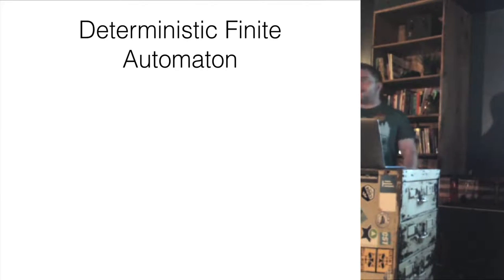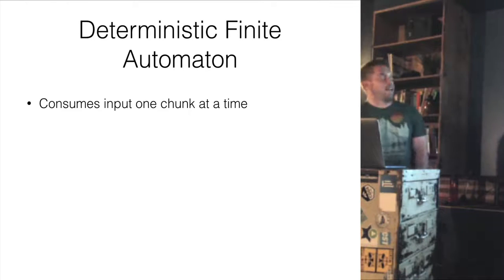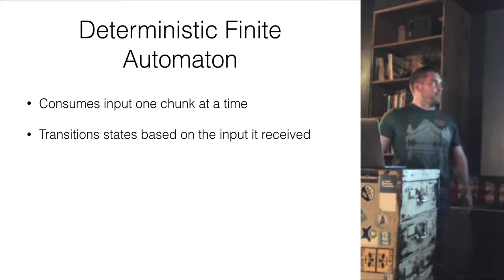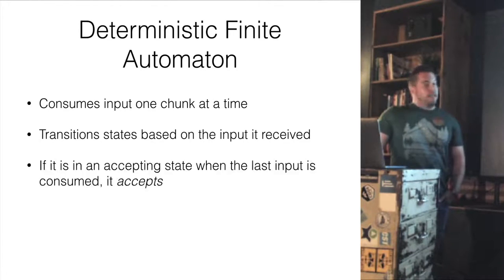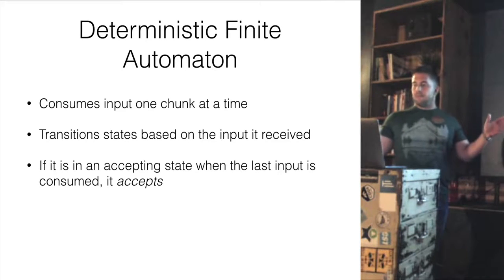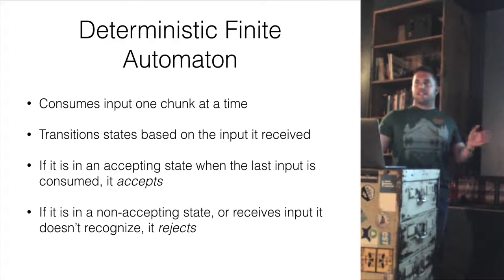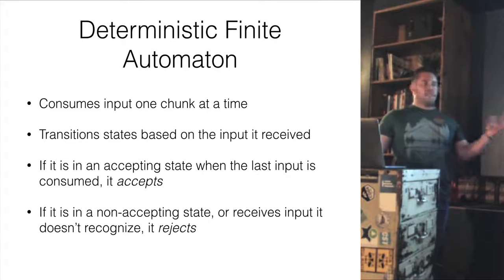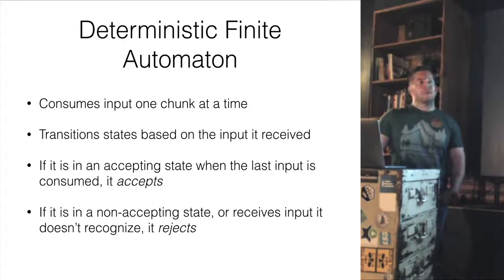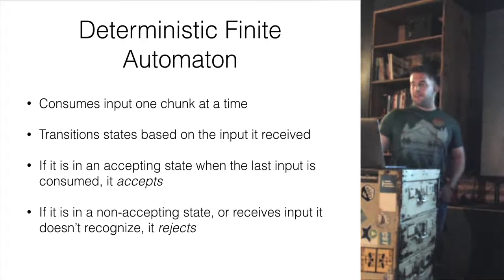Our little robot is also a real thing — it's called a deterministic finite automaton, or DFA. It basically just consumes input one chunk at a time and transitions states depending on what input is received. If it's in an accepting state when it runs out of tokens, it accepts. If it's in a non-accepting state or receives input that doesn't match anything, it rejects. So now we've seen how you can take a URL, parse it into a tree, make that tree into a map, and have a little robot figure out if it's a valid URL or not. But we're not any better off if we have to do that for every single route — that was our whole problem in the beginning.